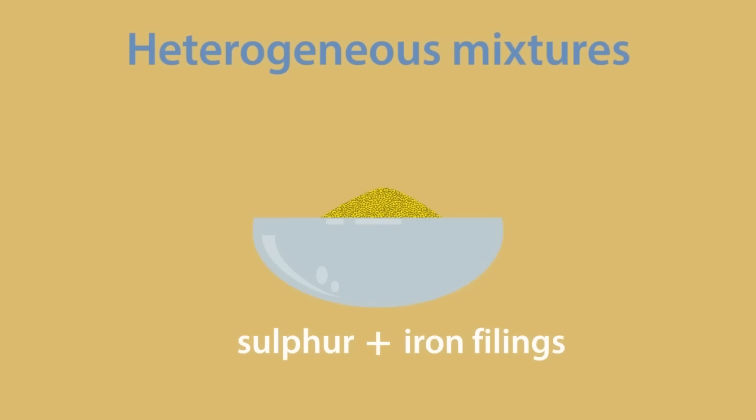We can easily separate this mixture with a magnet. The magnet will remove all of the iron filings, leaving behind the yellow sulfur powder.